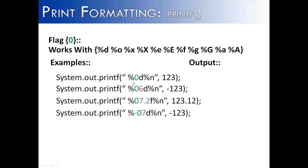If you notice down here in the first example, the 0 flag goes between the percent character and the conversion data type. What the flag 0 does is it puts leading zeros before a value.